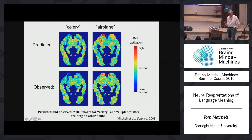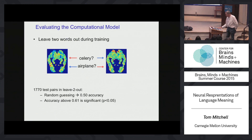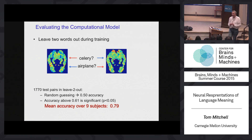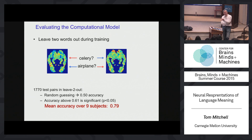In a more quantitative way, we can test the program by saying: here are two words you have not seen, and here are two brain images you have not seen — one is 'celery,' one is 'airplane.' You, the program, tell me which is which. If it was working at chance, accuracy would be 50%. Averaged over nine different subjects, we get 79% accuracy. This means three times out of four, we could give this trained model two new nouns it has never seen, two fMRI images for those nouns, and it could tell us correctly which was which. The model is extrapolating beyond the words on which it was trained — imperfectly, but somewhat successfully.